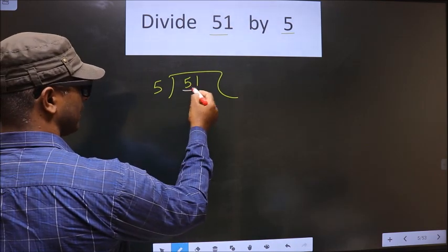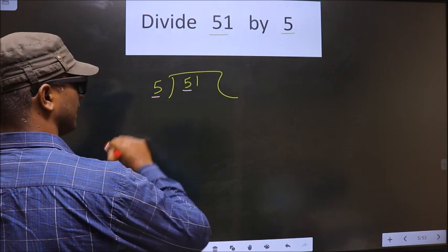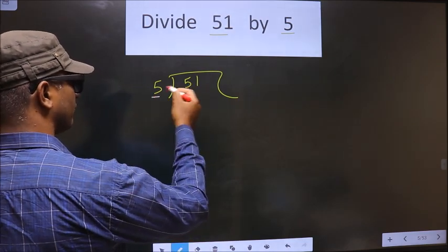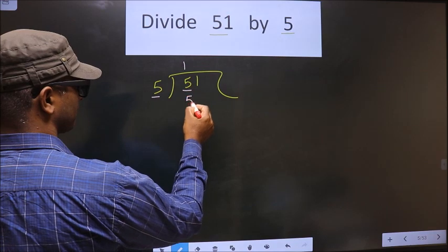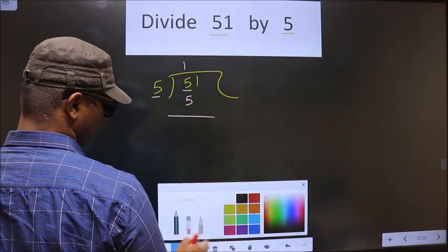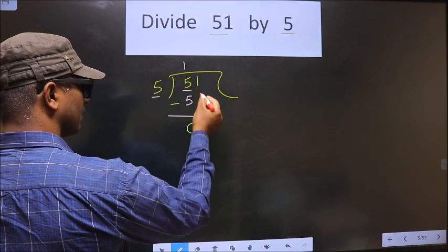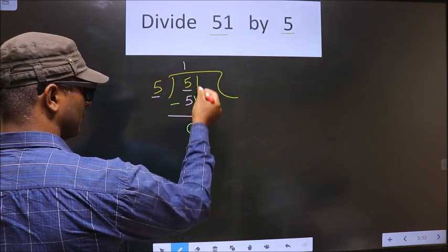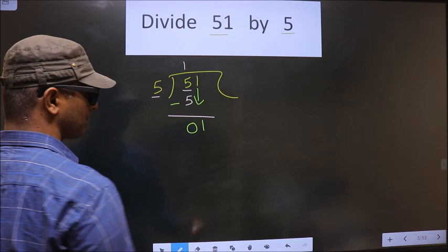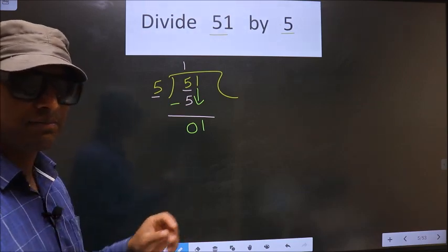Now here we have 5, here also we have 5. When do we get 5 in 5 table? 5 once 5. So now we subtract, we get 0. Now you bring this number down, which is 1. This is where many do the mistake.